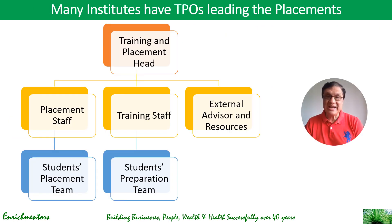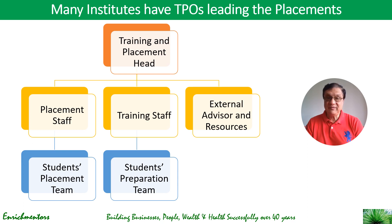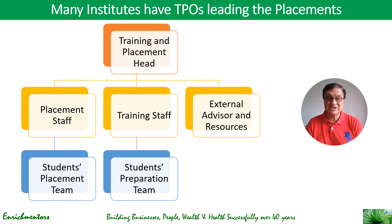Many institutes have what is called a Training and Placement Officer, or TPO. Across institutes, probably the largest number will have the TPO structure. In the TPO structure, there is a combined head of placement and training, under whom there is placement staff, training staff, and external advisors and resources. The placement or training staff may or may not have individually dedicated placement and preparation teams.